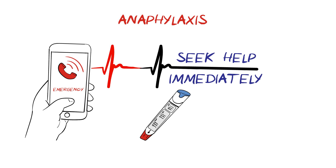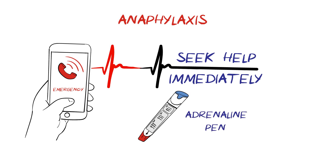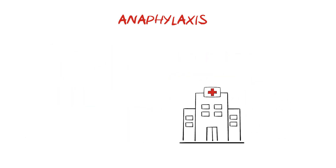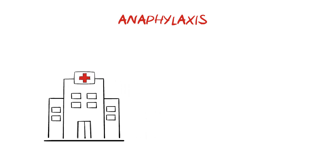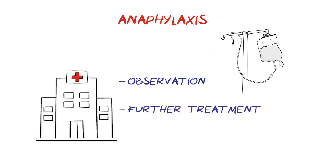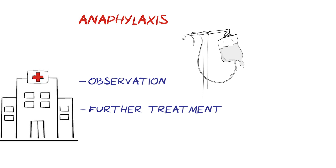Some people who have had an anaphylactic reaction before might carry an adrenaline auto-injector pen, prescribed by their doctor. This can be used whilst awaiting further medical help and is easy to use with the instructions on the side. It is important to go to hospital, even if you feel better, for a period of observation in case symptoms return. Further supportive treatments and medicines can be given if required.